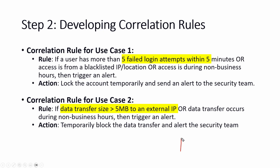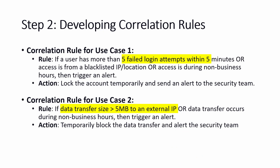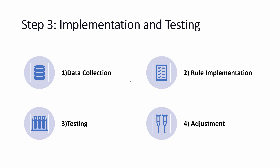For Use Case 2, the correlation rule is: if data transfer size is more than 5 MB going to an external IP outside the organization, the DLP will capture it and send the logs to the SIEM. We set this parameter in the SIEM. The action is to temporarily block the data transfer and alert the security team. That is the correlation rule created for the data exfiltration use case.